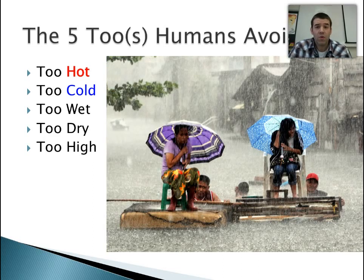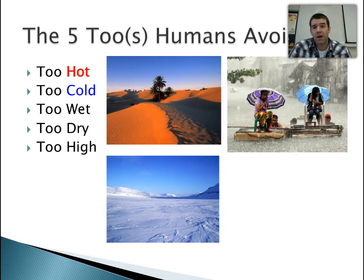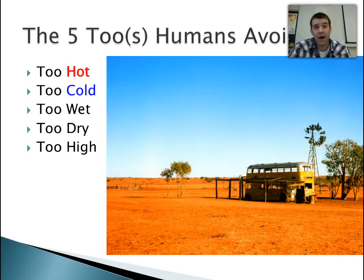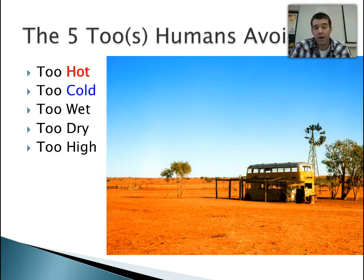Another condition that humans avoid is when it's too wet. Those conditions breed disease and make it difficult for daily activities. Natural disasters, providing food supplies, and basic everyday life can be disrupted in conditions where it's too wet. Conversely, too dry is another factor. It often goes hand in hand with heat, but it doesn't necessarily have to be desert climates — it can just simply be dry conditions that make it very difficult to support human population.